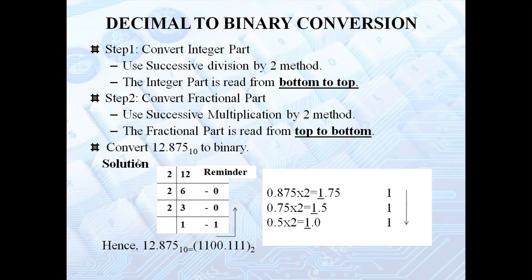Consider the example of converting a decimal number to binary. For the integer part 12, use successive division by 2. Divide 12 by 2: quotient 6, remainder 0. Divide 6 by 2: quotient 3, remainder 0. Divide 3 by 2: quotient 1, remainder 1. Read the answer from bottom to top: 1, 1, 0, 0. So the integer part in binary is 1100.